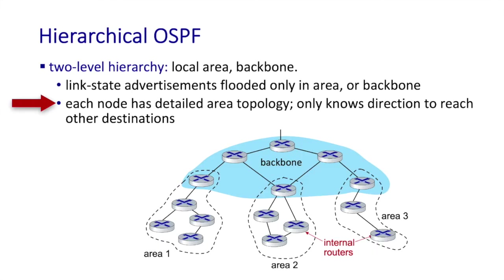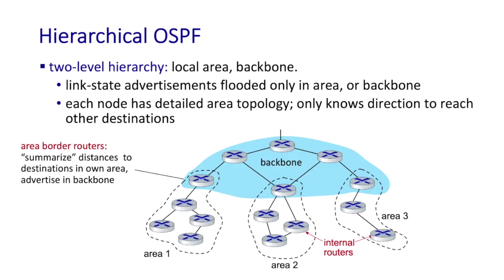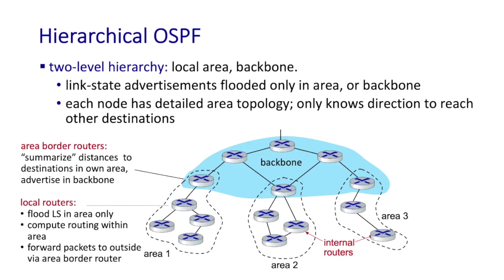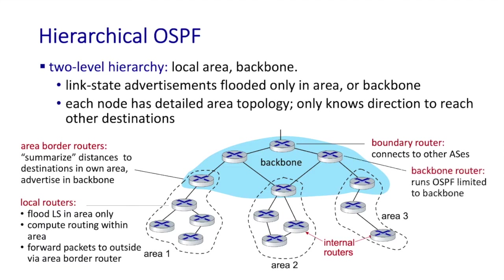Each node has detailed topology information only within its area or backbone. Area border routers summarize distances to destinations in their own area and advertise this to backbone nodes. Local routers flood link state within the area, compute routing, and forward packets destined outside the area to the area border router. Backbone routers run OSPF and flood link state only within the backbone. Boundary routers connect the hierarchical OSPF network to other autonomous systems.